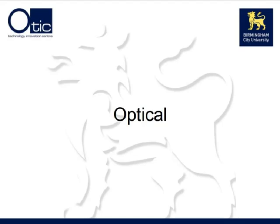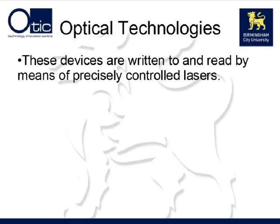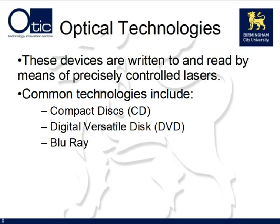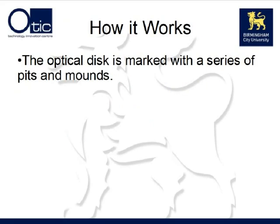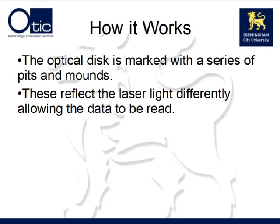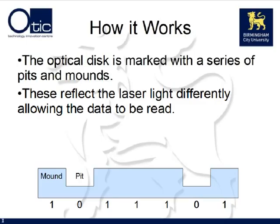The next type of storage technology we'll look at is optical storage. Optical storage devices are read and written to by means of precisely controlled lasers. The most common types of optical technologies around today include the compact disk or CD, the digital versatile disk or DVD, and the Blu-ray disk. In an optical drive, the disk is marked with a series of pits and mounds. The pits and mounds reflect the laser light differently, allowing them to be recognized as zeros and ones. A one is represented by a mound and a zero by a pit, so we can easily encode binary data onto a CD or other disk by means of these mounds and pits.